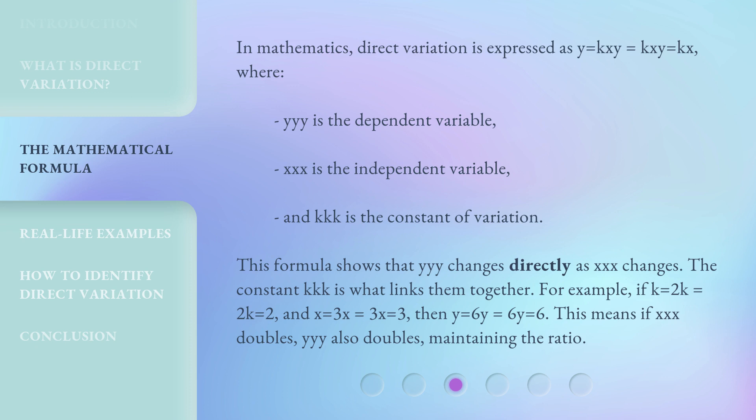The constant k is what links them together. For example, if k = 2 and x = 3, then y = 6. This means if x doubles, y also doubles, maintaining the ratio.